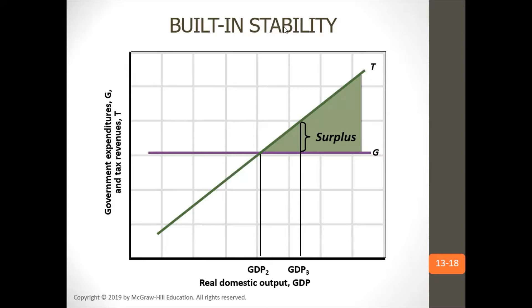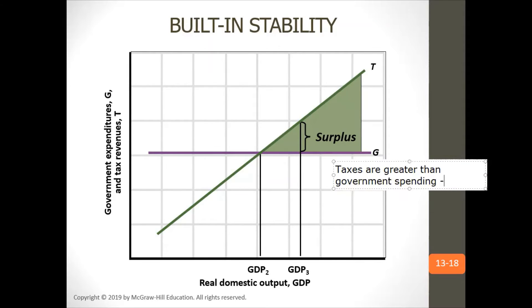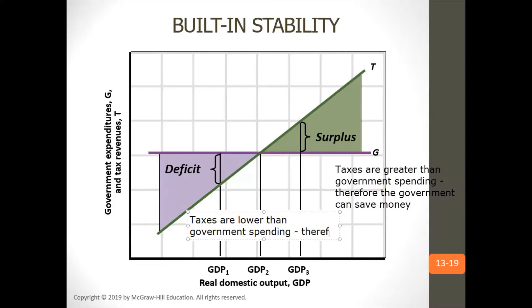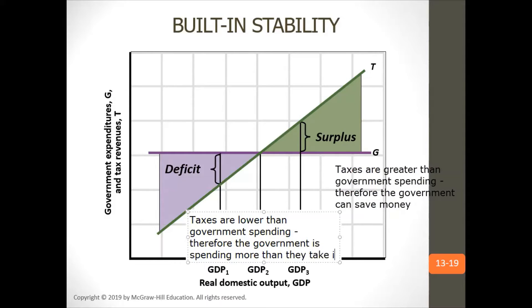A surplus is when taxes are greater than government spending — the government can save money. A deficit is when taxes are lower than government spending — the government is spending more than they take in, so they are going into debt.